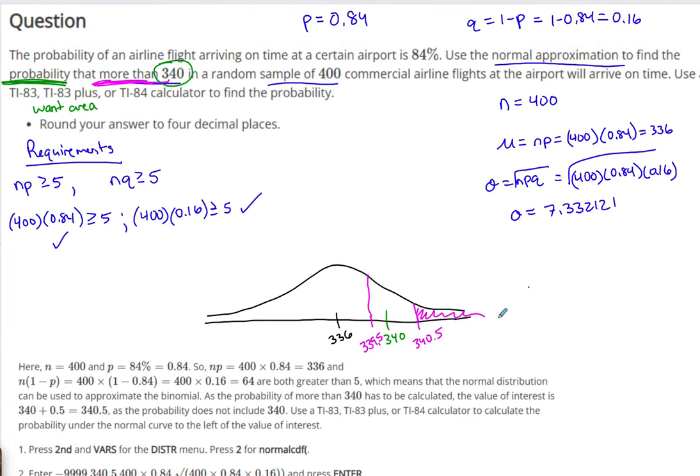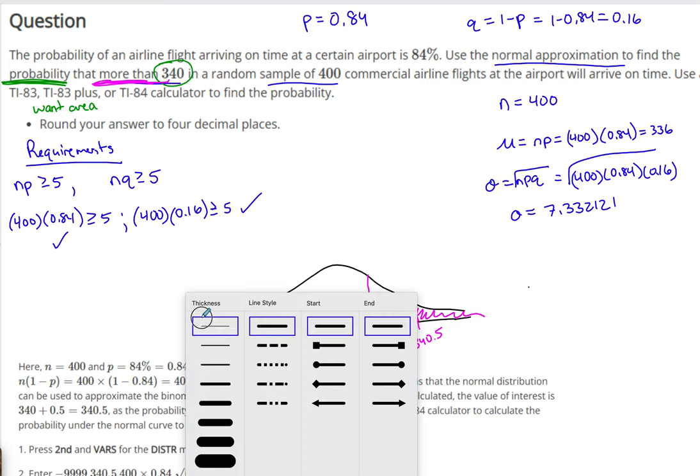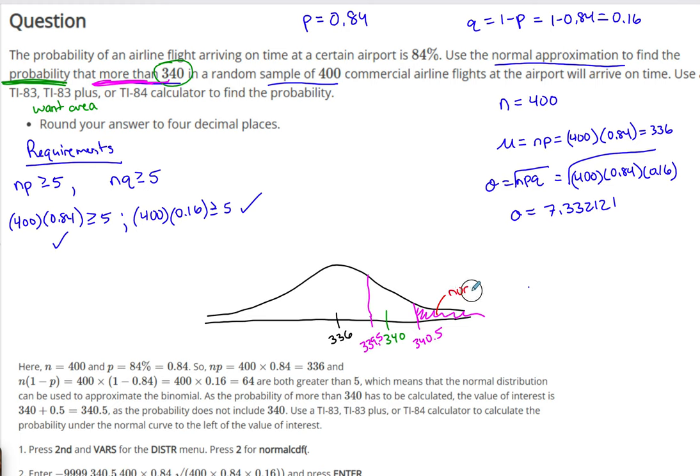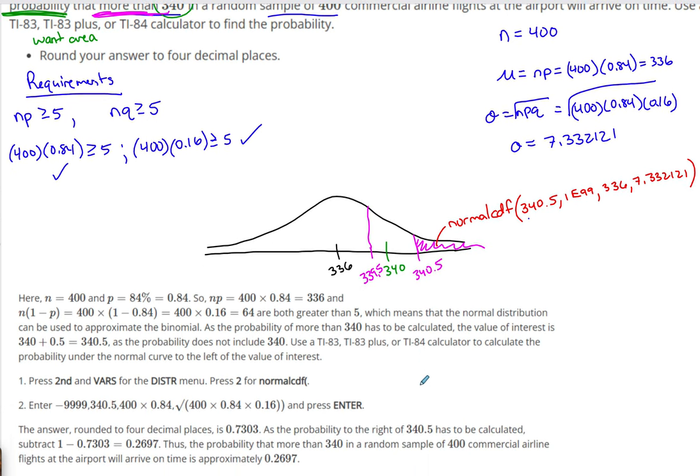Calculate. So now we're going to calculate. In order to calculate an area, I'm going normal CDF. Let me use a different color. Let's go red. Normal CDF, and I'll show it in a second, and we're going to bound our area. My lower bound is 340.5. My upper bound is a large positive number, which we typically in this class are using 1E99, right, like infinity. Then our mean was 336, we determined that, and our standard deviation was 7.332121. Now I want to show you, press 2 for the distribution menu. Press 2 for normal CDF. That's what we just determined we're going to use.